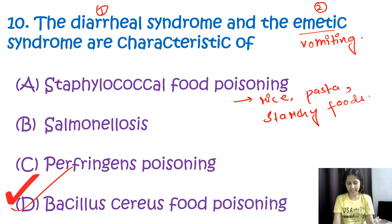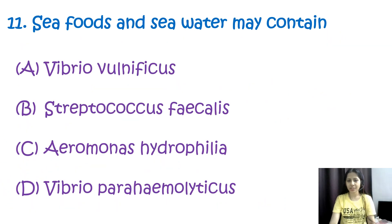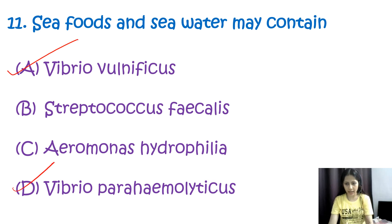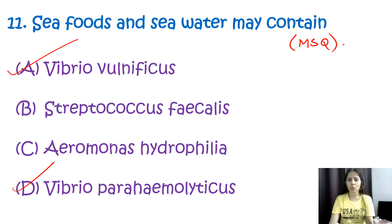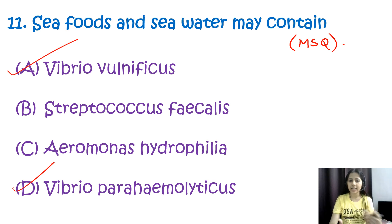Question number eleven: seafoods and sea water may contain — options are Vibrio vulnificus, Streptococcus faecalis, Aeromonas hydrophila, or Vibrio parahaemolyticus. Seafood and sea water may contain both Vibrio vulnificus and Vibrio parahaemolyticus. This is a multiple select question. These two bacteria are associated with seafood and sea water, and consumption of raw or uncooked contaminated seafood can lead to various gastrointestinal illnesses. Correct options are A and D.